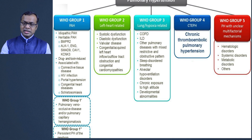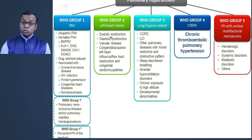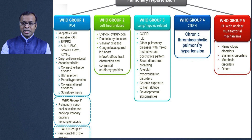A more recent WHO classification divides pulmonary hypertension into five groups. Group 1 is pulmonary arterial hypertension (pre-capillary). Group 2 is related to left heart disorders (post-capillary). Group 3 is related to lung abnormalities or pathologies causing hypoxia. Group 4 is chronic thromboembolic pulmonary hypertension. Group 5 is a mixed bag of multifactorial abnormalities.